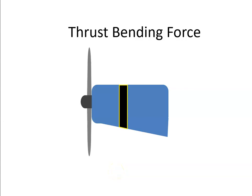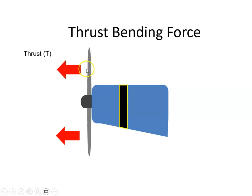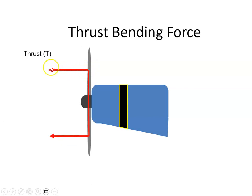Another force that acts on the propeller is the thrust bending force. If we have a propeller rotating at a particular velocity, it will be producing some thrust. We can think of this thrust being developed at the master station, which is approximately 75% of the length of the propeller blades. So effectively, we have a thrust vector acting at this point.